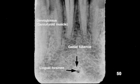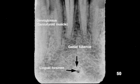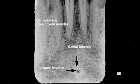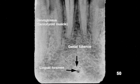In the mandibular incisor region is the lingual foramen. It is radiolucent and looks like the hole in a donut. Around it are the genial tubercles. These are radiopaque, and they are spurs of bone for ligament attachments.